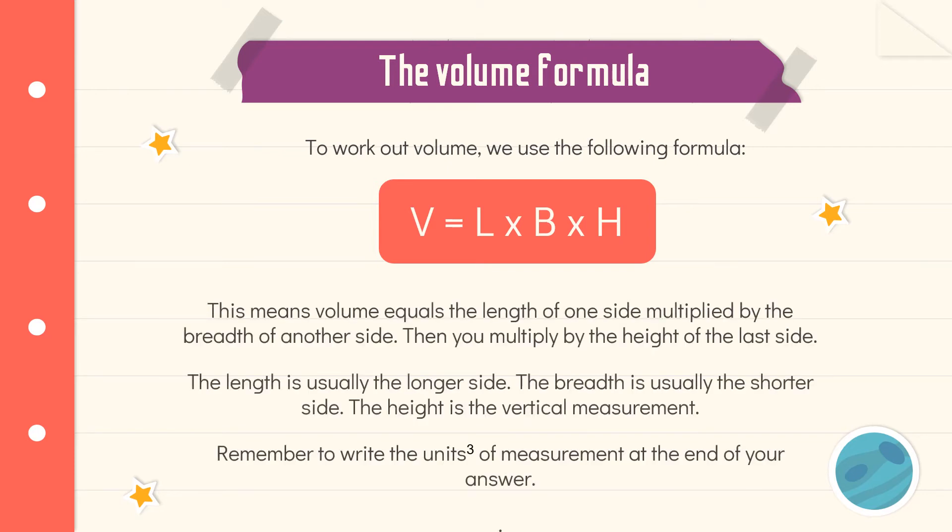This means the volume equals the length of one side multiplied by the breadth of another side. Once you've gotten that answer, you then multiply that answer by the height of the last side. So the length obviously is usually the longer side. The breadth is usually the shorter side. And the height is the vertical measurement. So how high it stands off the ground.